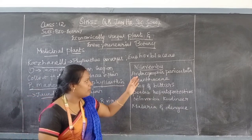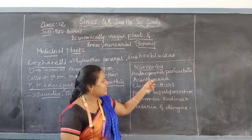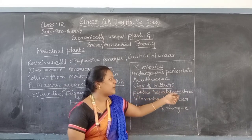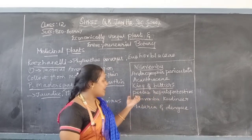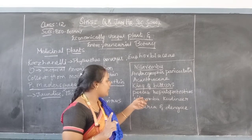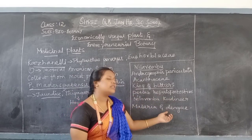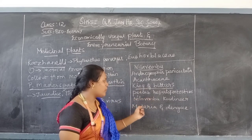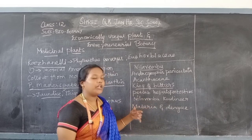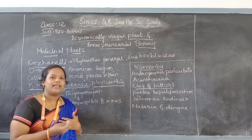After Keelanelli, we see another herb called Neelavembu. Its botanical name is Andrographis paniculata, from the family Acanthaceae. It is called the king of bitters because it is very bitter. It has potent hepatoprotective properties — meaning it protects the liver. Along with eight herbs including Neelavembu, a liquid called Nilavembu Kudineer is prepared, which helps fight against malaria and dengue. Our government provides Nilavembu Kudineer every year to prevent these mosquito-borne diseases.